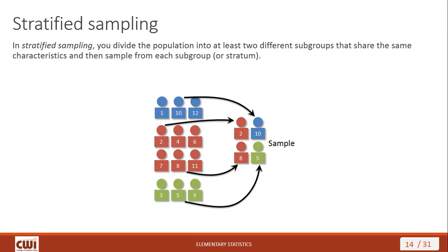In stratified sampling, the population is divided into two or more subgroups, and then you randomly select from each of those subgroups. In the graphic, you've got blue people on top, red people in the middle, and green people below. We take one from the blues, two from the reds (because they're twice as big), and one from the greens — that gives a stratified sample. The name comes from strata, the layers of material embedded in rock that mark geological time. Each different group represents one of those levels.